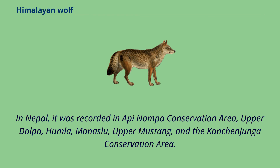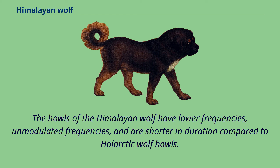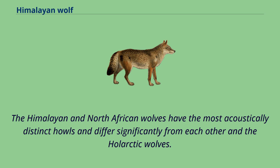In Nepal, it was recorded in Api Nampa Conservation Area, Upper Dolpa, Humla, Manaslu, Upper Mustang, and the Kangchenjunga Conservation Area. The Nepal Himalayas provide an important habitat refuge for the Himalayan wolf. The howls of the Himalayan wolf have lower frequencies, unmodulated frequencies, and are shorter in duration compared to whole arctic wolf howls. The Himalayan and North African wolves have the most acoustically distinct howls and differ significantly from each other and from whole arctic wolves.